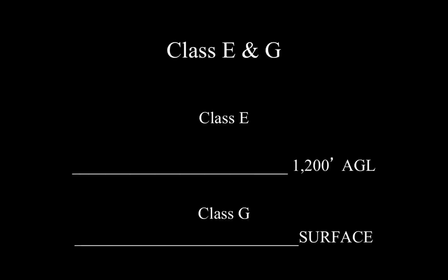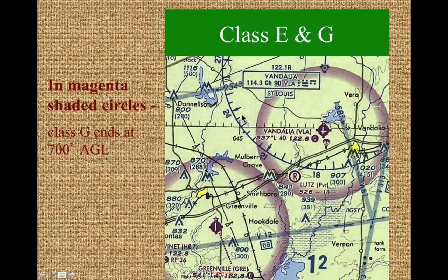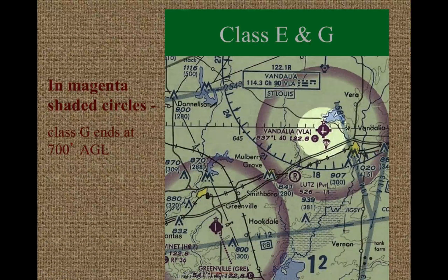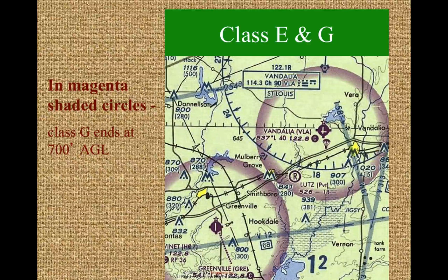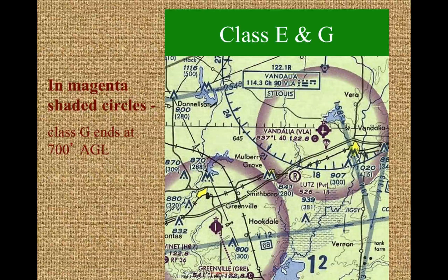Going back to our previous rule, we typically find the changeover altitude at 1,200 feet between G and E. But inside the magenta circle, G ends at 700 feet and that's where Class Echo takes over. So inside this area think 700 feet, and outside this area think 1,200 feet. If you were a pilot taking off from this airport, you'd take off in Class G, and after passing 700 feet you'd be in Class E. A seaplane pilot taking off from the lake would take off into G airspace, but wouldn't cross into E until reaching 1,200 feet.